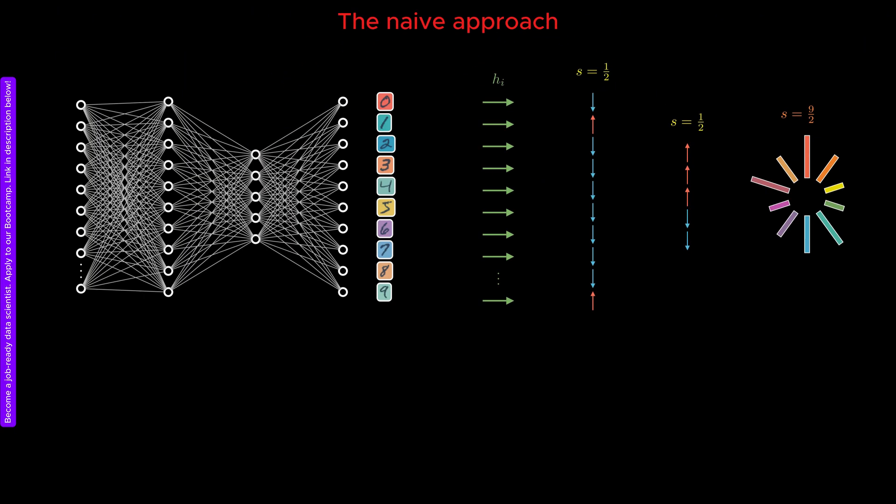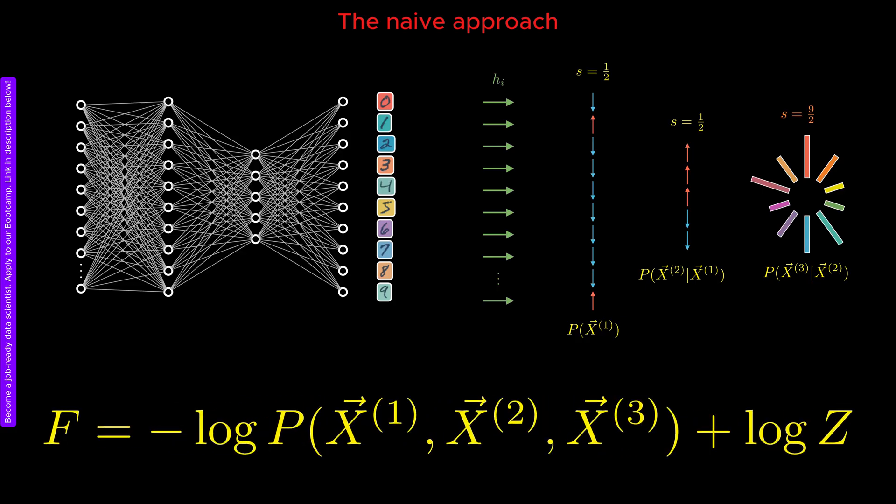But how exactly should we figure out the free energy landscape of an AI model? In a previous video, we showed how one can use the chain rule of probability to construct the free energy landscape of a fully connected neural network. The idea was to merge the probabilities of individual neurons layer by layer, eventually obtaining a global probability distribution.